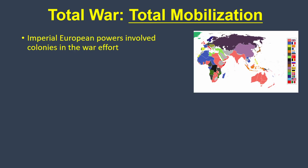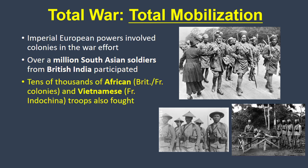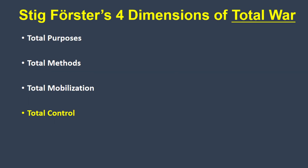Since this war was fought among the great imperialist nations of Europe, it meant that their colonies around the world also contributed heavily to the war effort. Over a million South Asian soldiers from British India fought in the war, as did tens of thousands of Africans and Vietnamese troops. In addition, the economies of these colonies were also harnessed to supply the war.